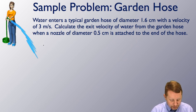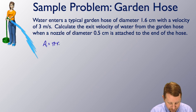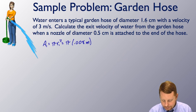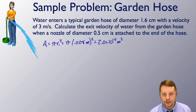To begin, let's figure out what our first area is. A1 will be π times radius 1 squared, or π times 0.008 meters—0.008 is half of 1.6 centimeters—squared, for an area of about 2.01 times 10 to the minus 4 square meters.